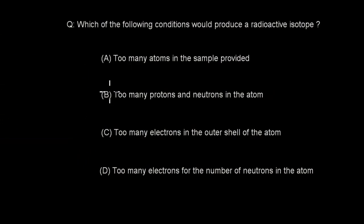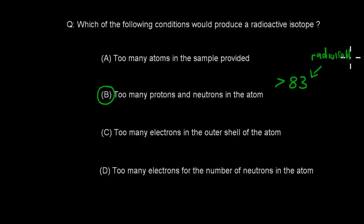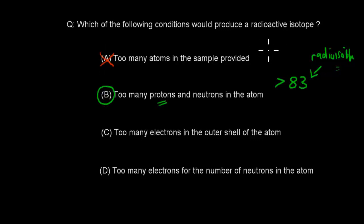The correct answer is B. The reason is that anything with an atomic number greater than 83 is a radioisotope, and atomic number relates to protons. So anything that has too many protons — more than 83 — is definitely a radioisotope. Too many protons and neutrons in the atom makes it a radioisotope. Too many atoms in the sample has nothing to do with radioactivity, too many electrons in the outer shell also has nothing to do with it, and too many electrons for the number of neutrons is also unrelated. The correct answer is B.